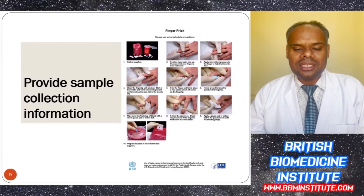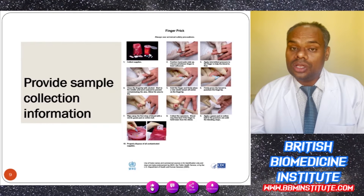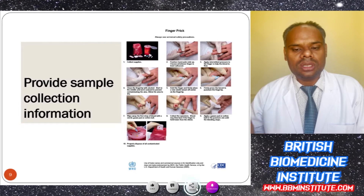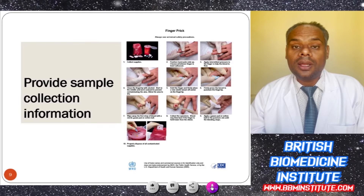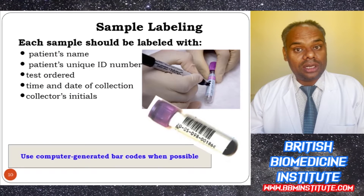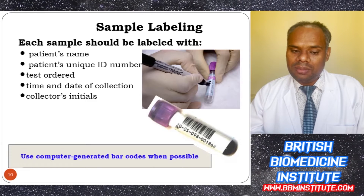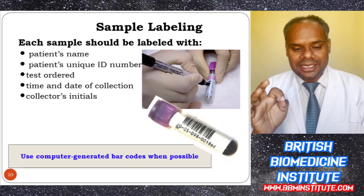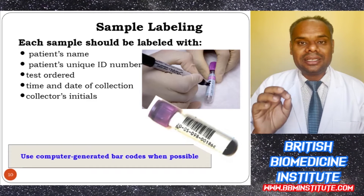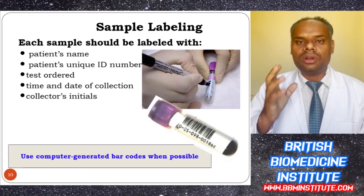We can provide sample collection information using available SOPs, or use various techniques to collect blood samples from a patient, such as the finger prick method. Sample labeling is an important step — every sample must be labeled with patient name, unique patient ID, test ordered, date and collection time, collector initials, and computer-generated barcodes wherever possible.